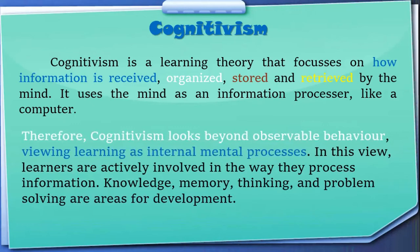Cognitivism looks beyond observable behavior. This theory is contrary to behaviorism — when we talk about cognitivism, we are talking about how our mind works while we learn a language or perform an action. It views learning as internal mental processes. In this view, learners are actively involved in how they process information; knowledge, memory, thinking, and problem solving are all areas for development.